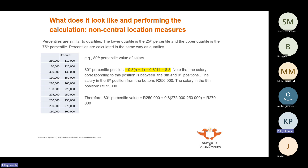We want to work out the 80th percentile. 80 divided by 100 is 0.8. The position formula is 0.8 × (n + 1) = 0.8 × 11 = 8.8. So the 80th percentile is at position 8.8.